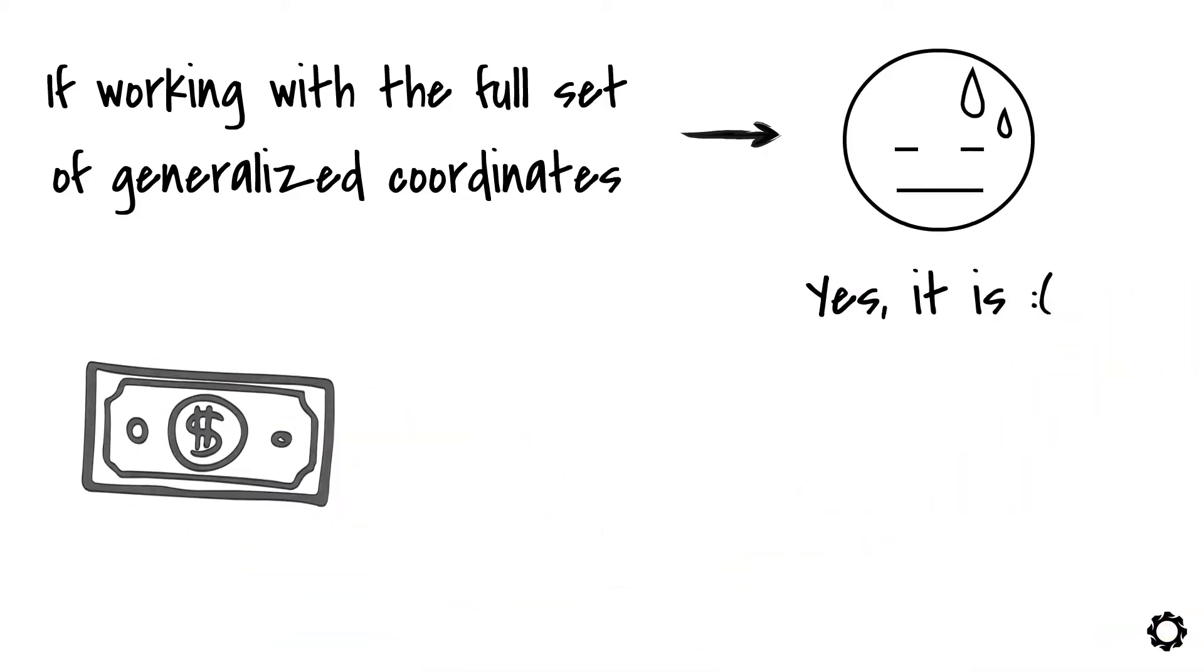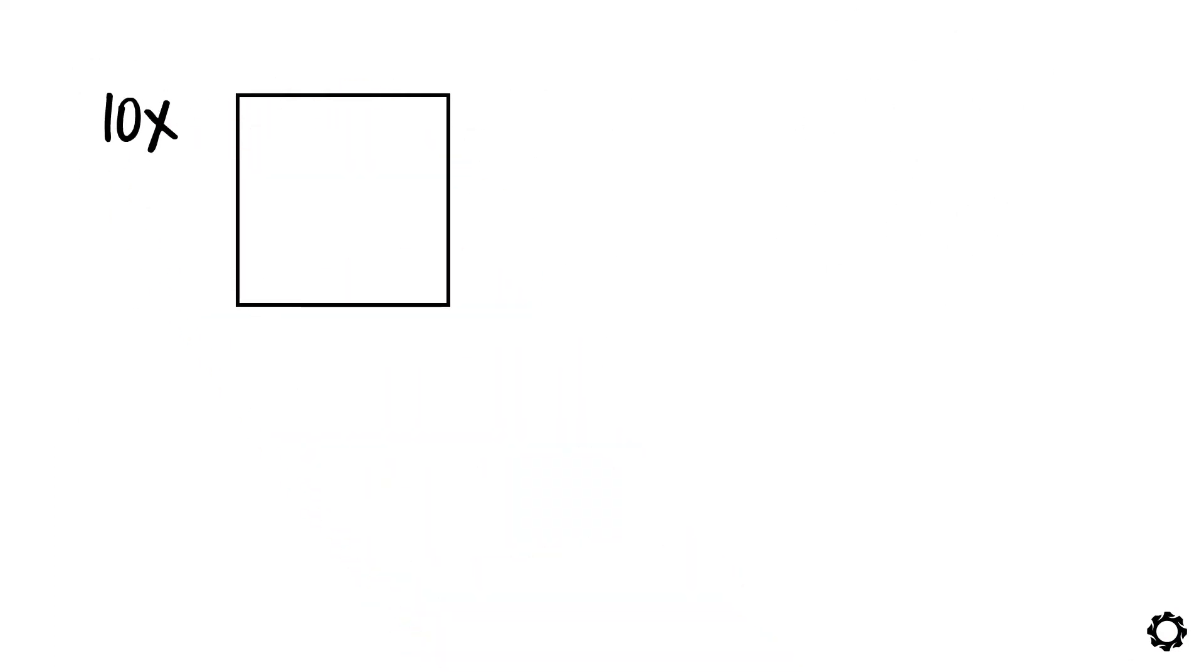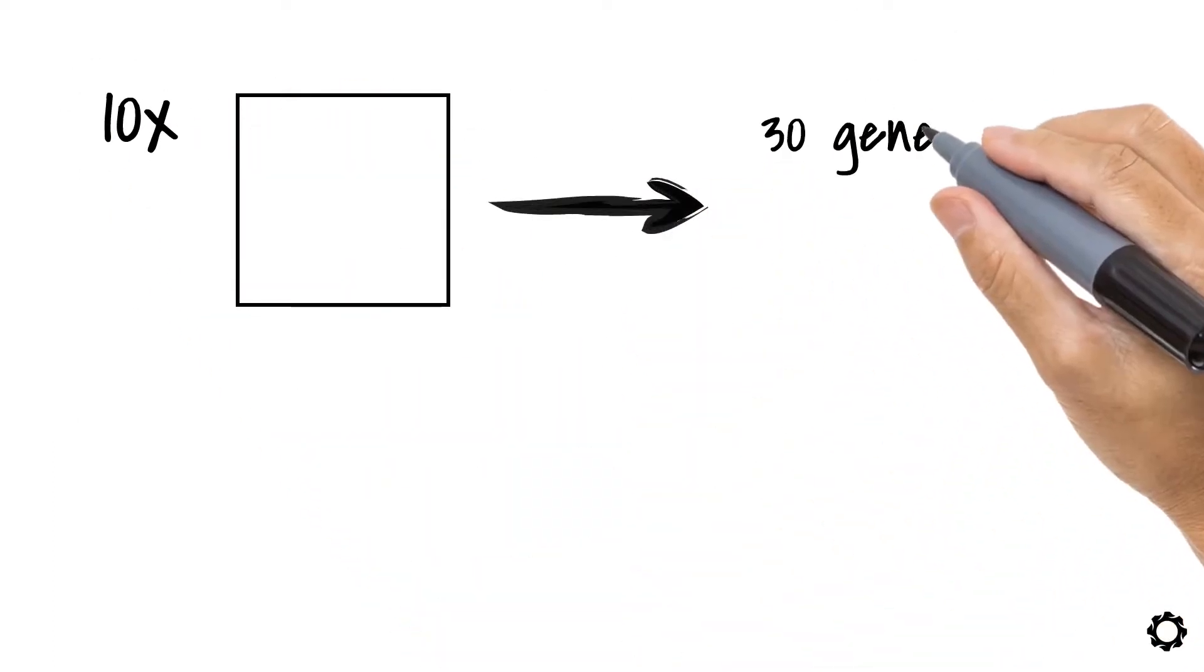That's the price we pay for not working with the reduced set. Imagine you have a multibody system consisting of 10 bodies. You will have to deal with 30 generalized coordinates.